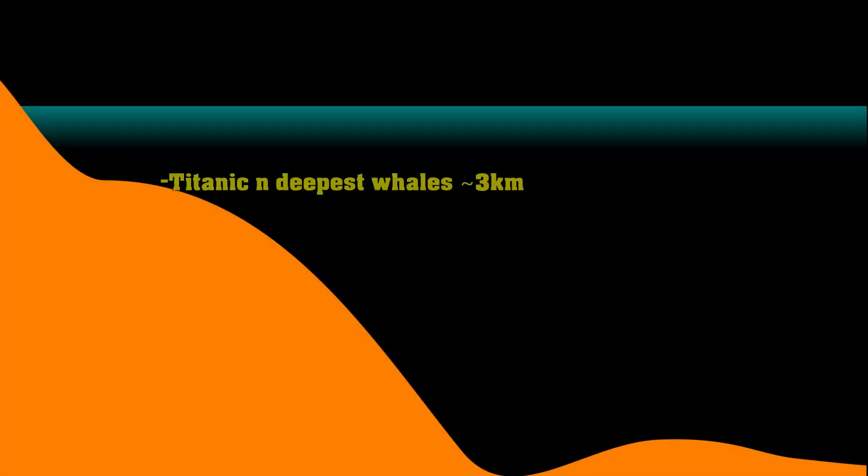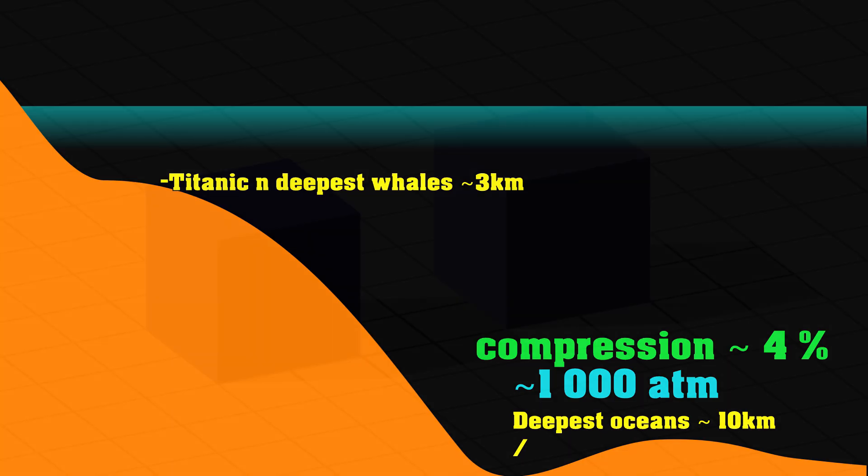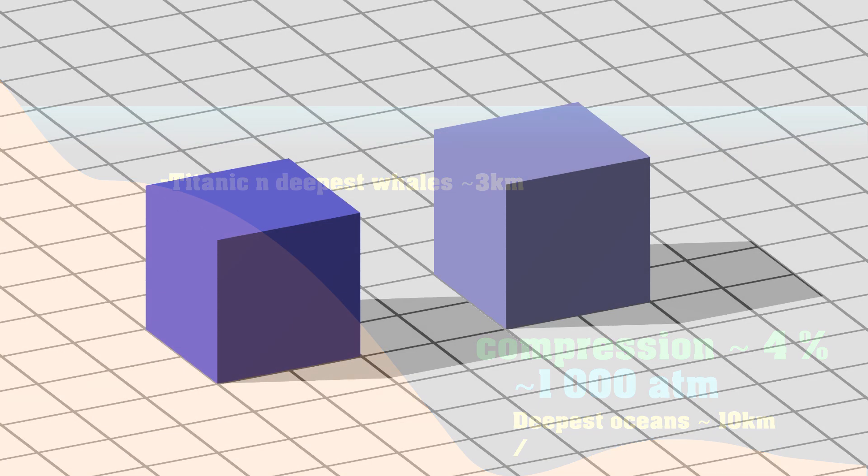Water at 1,000 atmospheres, which is give or take the pressure at the deepest parts of the ocean. The water is compressed by about 4%, which might not sound like much. And indeed, if I were to show you a cube that has 4% less volume, you would barely be able to tell the two apart. In fact, whatever, let's do that. So here we have two cubes, one of which has 4% less volume than the other. Can you tell which one's which?